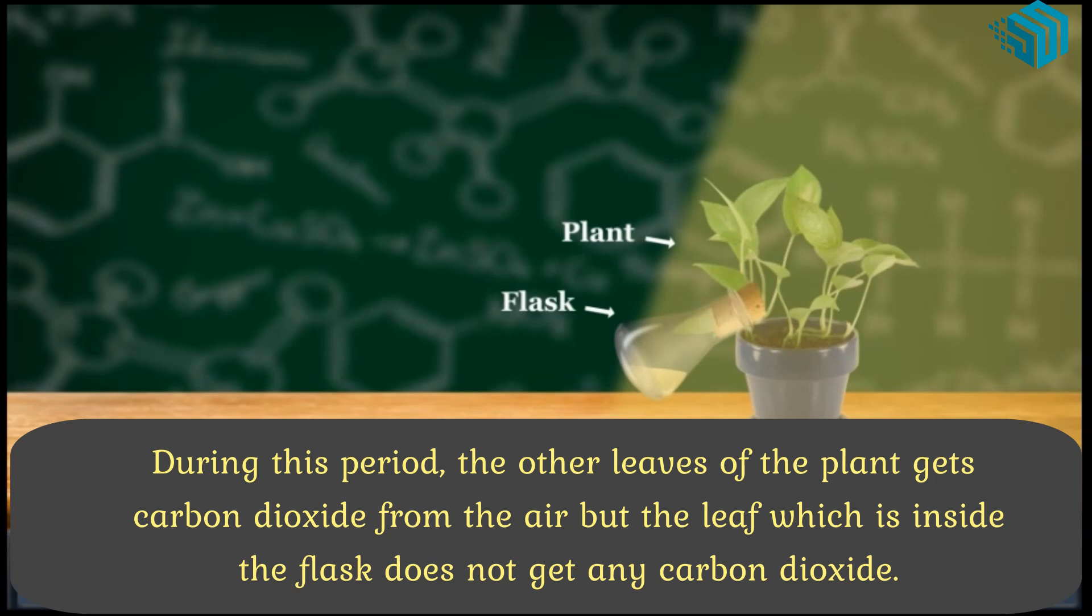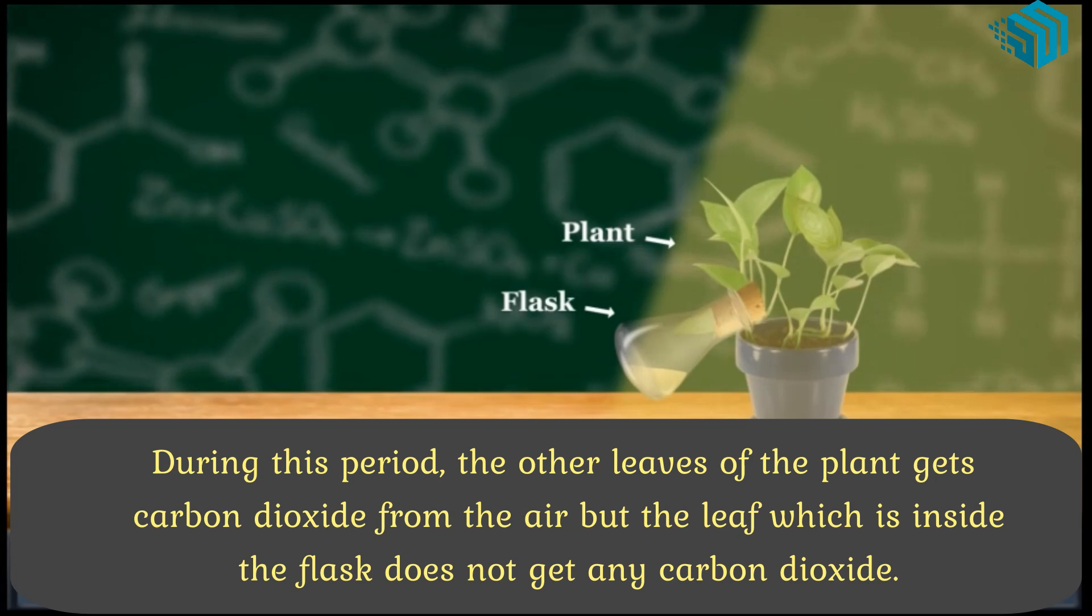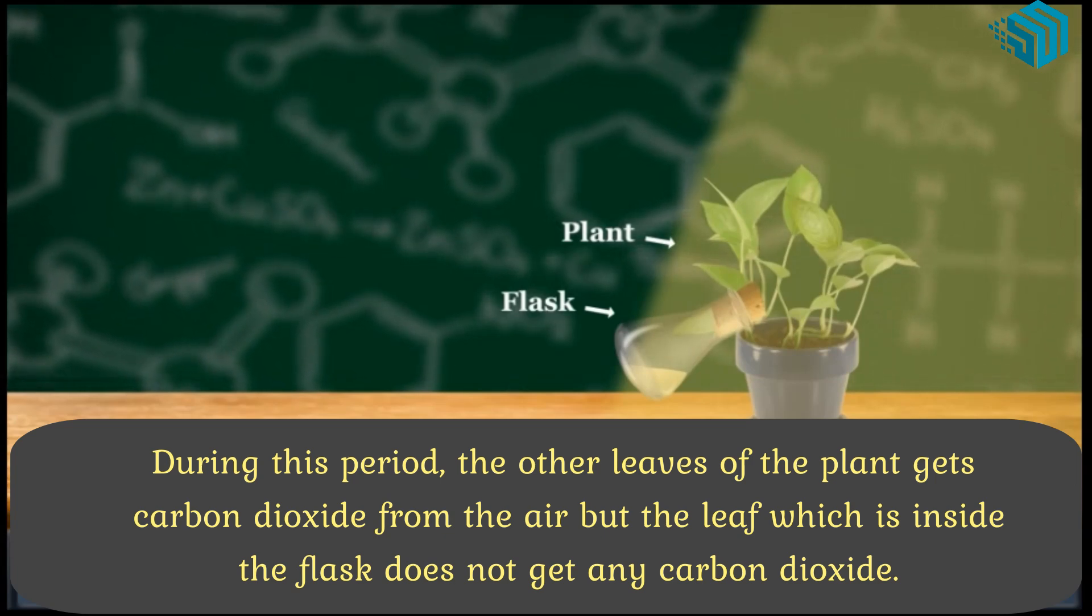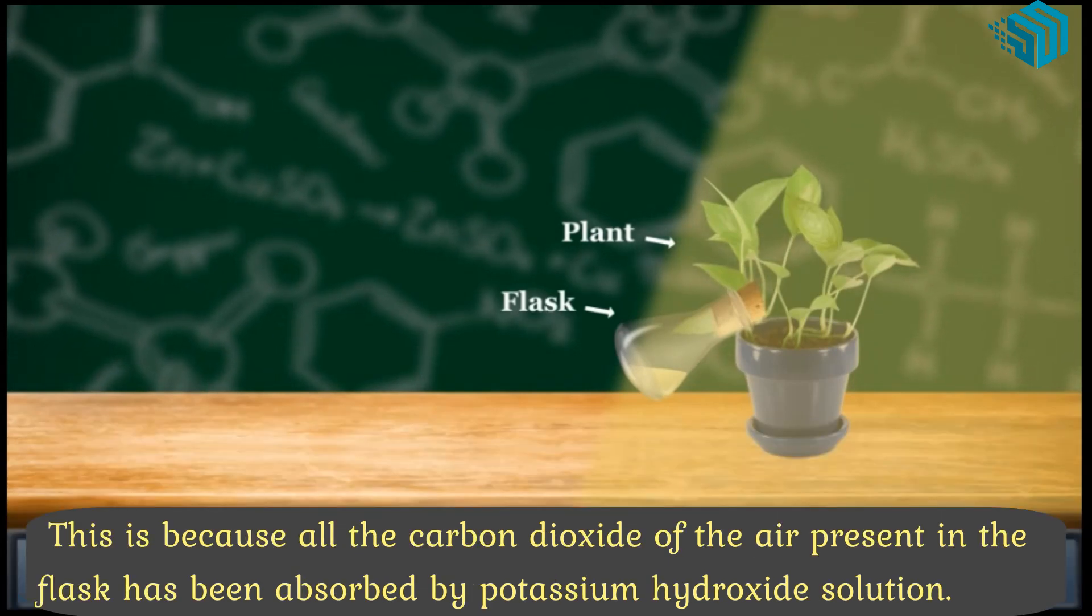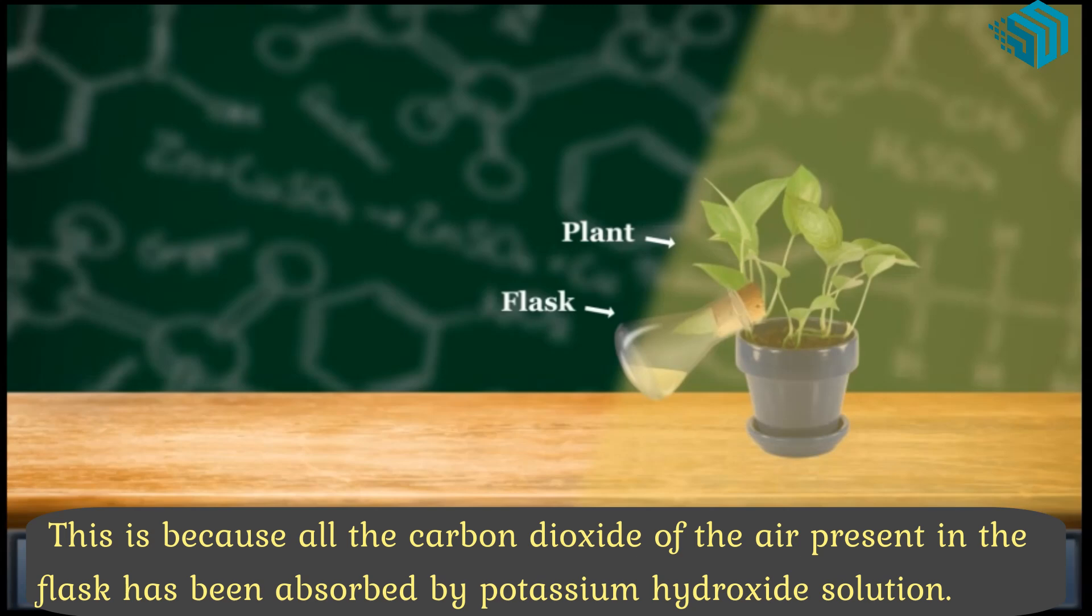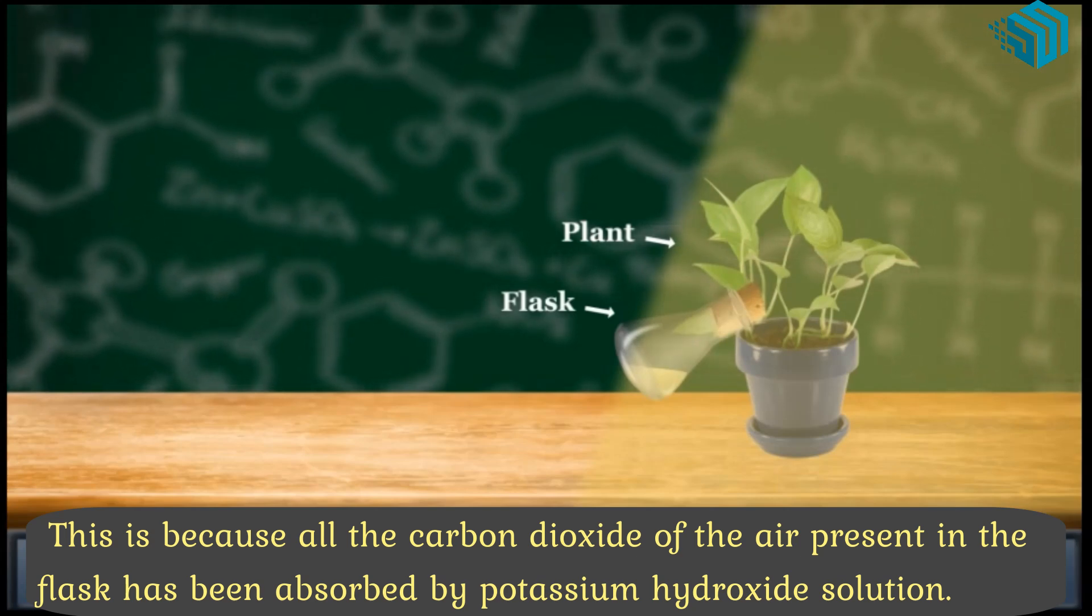During this period the other leaves of the plant get carbon dioxide from the air, but the leaf which is inside the flask does not get any carbon dioxide. This is because all the carbon dioxide of the air present in the flask has been absorbed by potassium hydroxide solution.